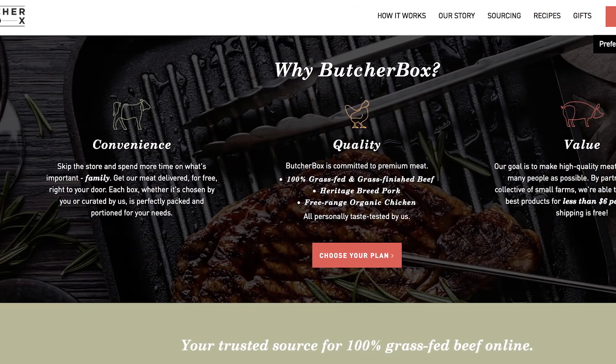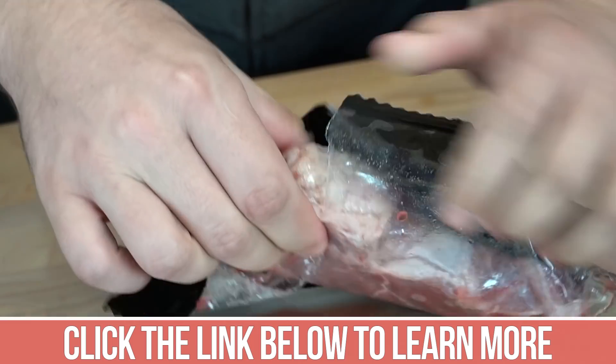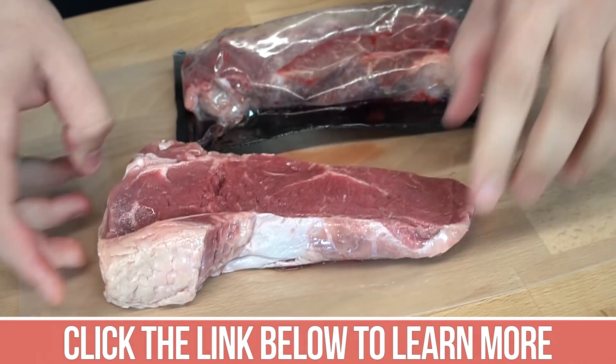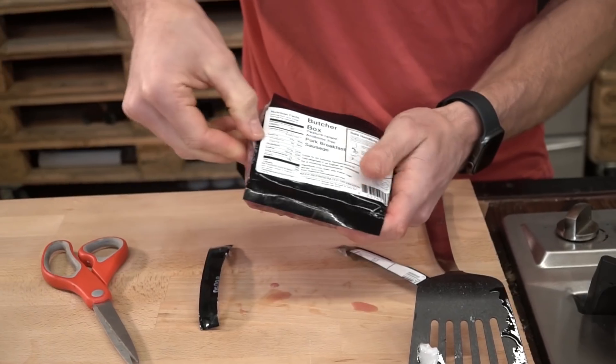Also want to make sure you check out ButcherBox down below in the description, there's a special link there. If you're doing the ketogenic diet or you're just someone that eats meat, you want to make sure you're getting lower saturated fat content and a higher omega-3 and lower omega-6 values.